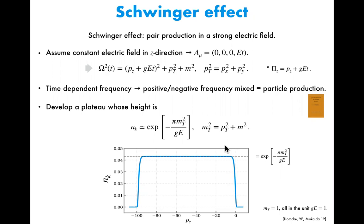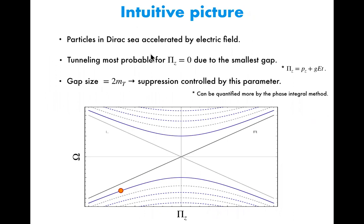This result can be intuitively understood using the Dirac sea picture. The negative energy states are occupied and the positive energy states are empty — that is the vacuum. Once you impose the electric field, a particle in the Dirac sea will be accelerated. At the point where P_z equals zero, the gap between negative and positive energy states is smallest, so at this point the particle can jump to the positive energy states with some probability — this corresponds to the particle production process.